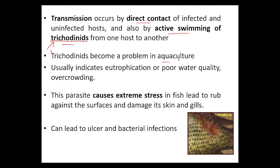Most fish can get trichodyniasis when we are doing aquaculture, because of poor water quality, eutrophication, and overcrowding. If an aquaculture pond has poor water quality, overcrowding with fish, and eutrophication, this can lead to the cause of trichodyniasis.